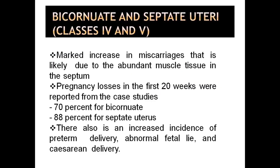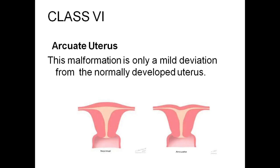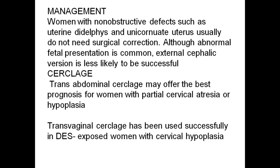Bicornuate and septate uterus lie in Classes 4 and 5. Marked recurrent miscarriage is likely due to abundant muscle tissue in the septum. Pregnancy loss in the first 20 weeks was reported in case studies: 70% for bicornuate and 88% for septate uterus. Class 6 is arcuate uterus, which is only a mild deviation from the normally developed uterus. Management of non-obstructive defects such as uterine didelphys and unicornuate uterus usually does not need surgical correction, although abnormal fetal presentation is common and external cephalic version is likely to be successful.